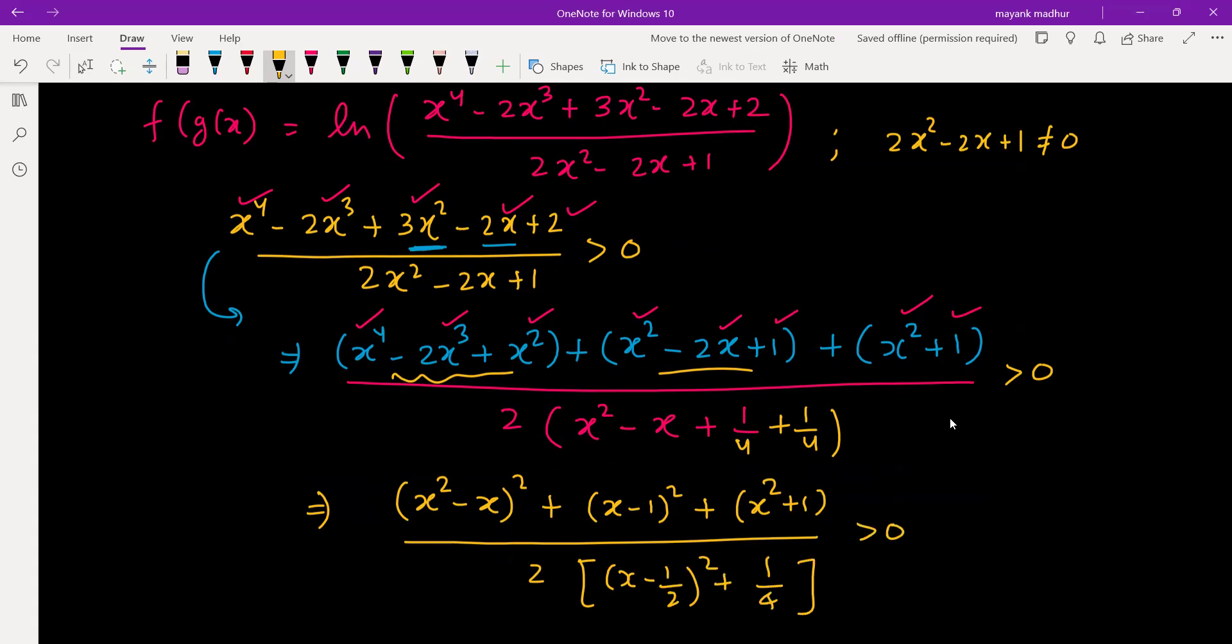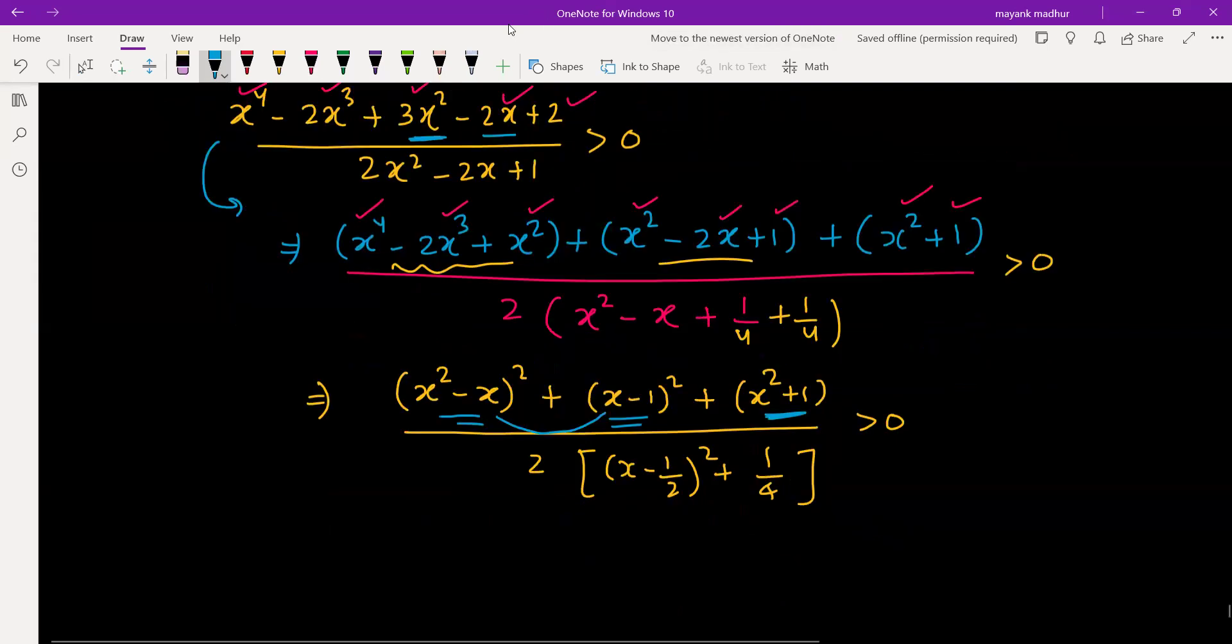So you can certainly say that this numerator is always positive because it can only be 0 when all of them are 0. First and second term can be 0 and both can also be 0 for x equal to 1, but this can never be 0 for any real value. Similarly, denominator will also be positive. The minimum value is 2 times 1/4.